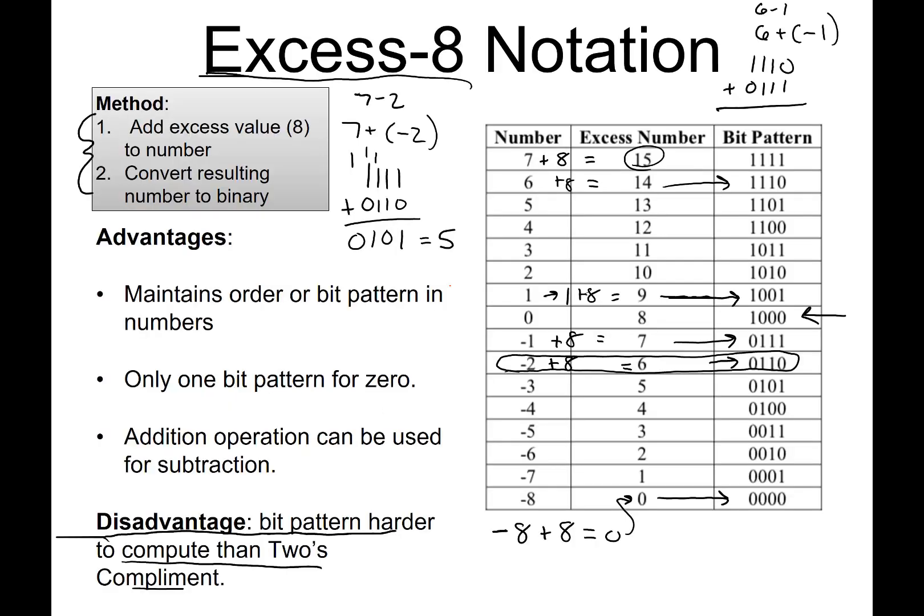Now I'm just going to add these together. So I get 10101, and this equals 5, which is what we expect because 6 minus 1 is 5.